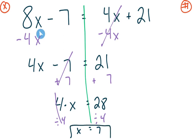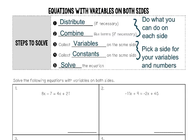I can always check it by plugging 7 back in for x on both sides — this side should equal this side. I got 49 on the left and 49 on the right. 49 equals 49, so I know I'm good to go. Now I want you to take a blank lined piece of paper and write it down without looking at the work we just did. Try it all by yourself, and when you get stuck, look back at the video. Press play when you're ready to check.